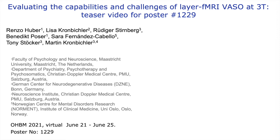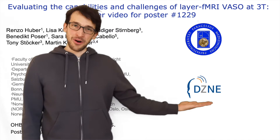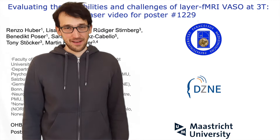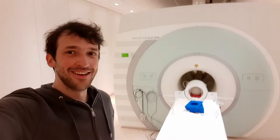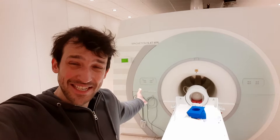The title of this poster is 'Evaluating the Capabilities and Challenges of Layer fMRI VASO at 3T.' My name is Renzo Huber, and this is a collaboration between the University of Salzburg, the DZN in Bonn, and the University of Maastricht. We are all interested in high-resolution, functional, layer-dependent fMRI, which is conventionally done at the strongest scanners available — such as one of the very few 9.4 Tesla scanners in the world, dedicated to very small voxels specifically for layer fMRI.